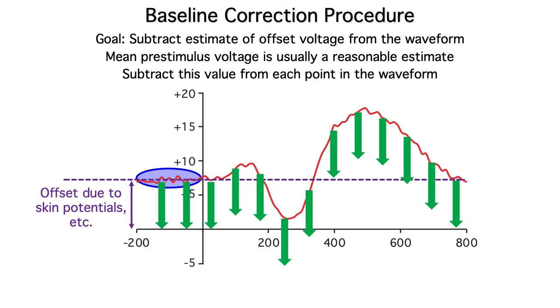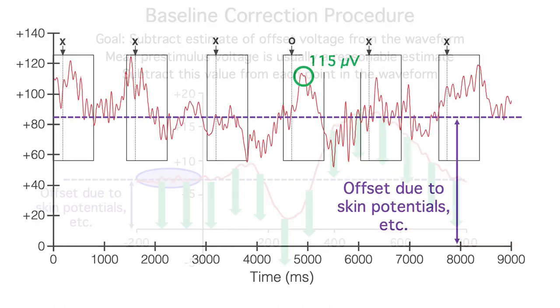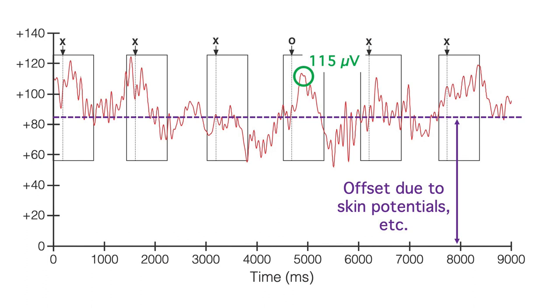You might wonder why we bother with baseline correction, given that it tends to exacerbate the impact of differential overlap. But we have to get rid of the voltage offsets. They can add hundreds of microvolts of uncontrolled variance to the data. There are other methods for dealing with these offsets, but these other methods also have shortcomings. And in about 99% of cases, I find that a combination of baseline correction and careful experimental design is the best approach.